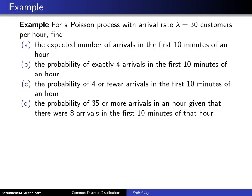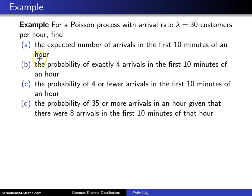For a Poisson process with arrival rate lambda equals 30 customers per hour, find the expected number of arrivals in the first 10 minutes of an hour.